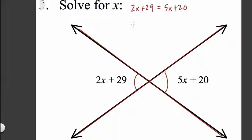So now we're just solving for x. I always bring my x's to one side by, in this case, subtracting 2x from both sides. We get 29 equals 3x plus 20.